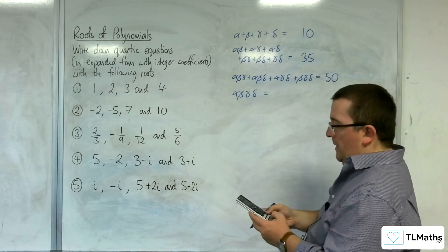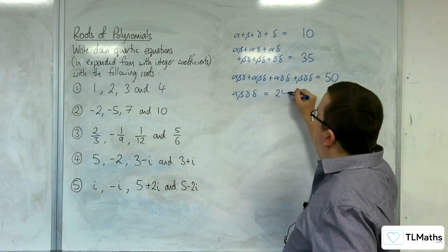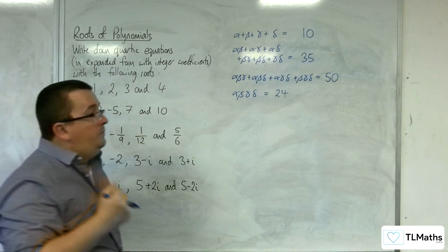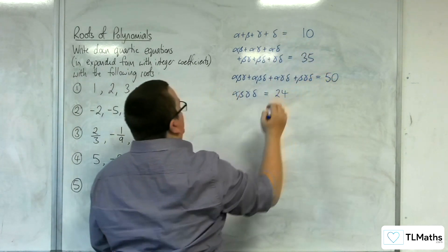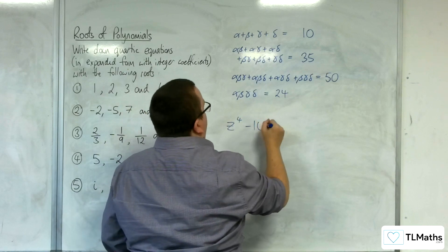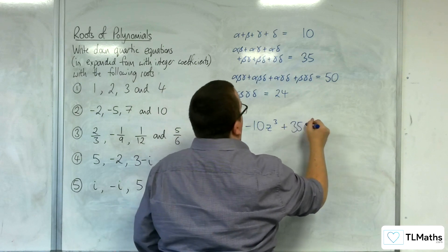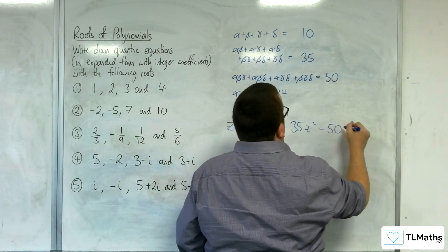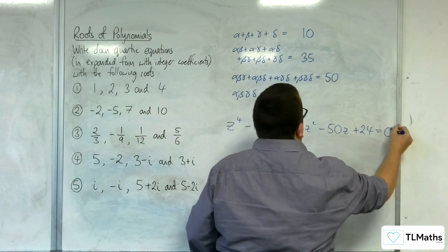And finally, alpha beta gamma delta, so 1 times 2 times 3 times 4, which is 24. So remember, the signs go negative, positive, negative, positive. So we're going to have z to the 4, take away 10z cubed, plus 35z squared, take away 50z, plus 24, equals 0.